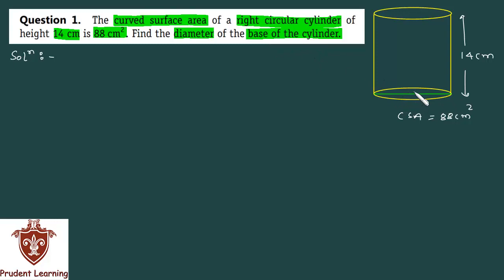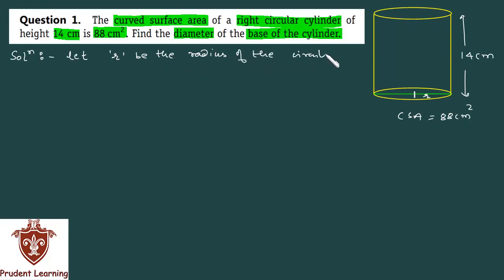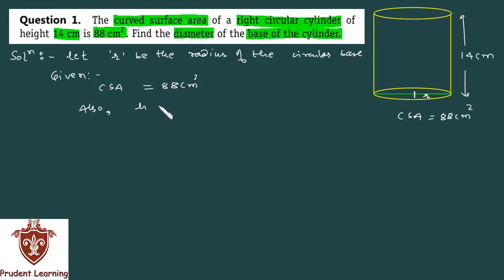Now, if you have found the radius of this base, you can find the diameter. That means we have to find the radius first. Let R be the radius of the circular base. We are given that the curved surface area of the cylinder is 88 cm squared and the height of the right circular cylinder is 14 cm.